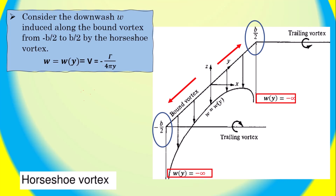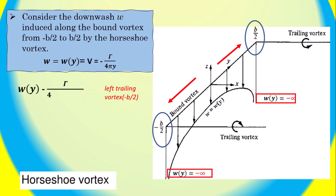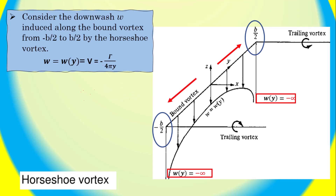The contribution from the left trailing vortex, and the contribution from the right trailing vortex trailing from B/2, gives: W(Y) equals negative gamma divided by 4 pi times (B/2 plus Y).